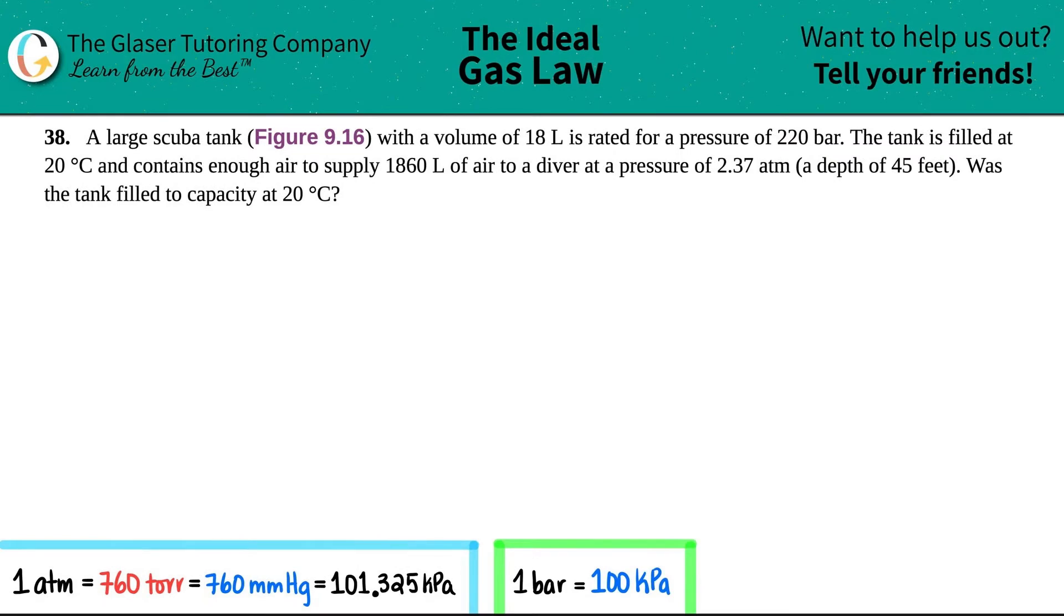Number 38: A large scuba tank, which is seen in Figure 9.16 with a volume of 18 liters, is rated for a pressure of 220 bar. The tank is filled at 20 degrees Celsius and contains enough air to supply 1860 liters of air to a diver at a pressure of 2.37 atm, which is a depth of 45 feet.